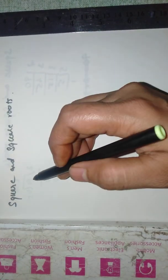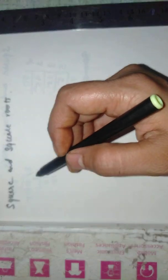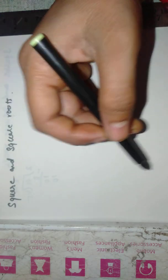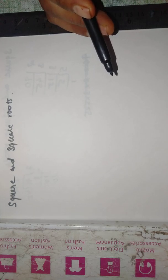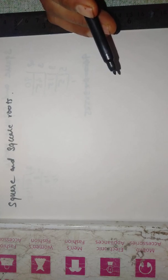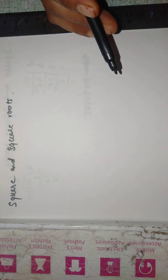Good morning students, square and square roots. In my last video I told you how we can find out whether a given number is a perfect square or not by the prime factorization method. Now in this video I will be telling you how we can make a number a perfect square.